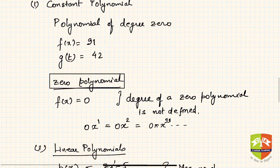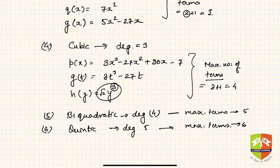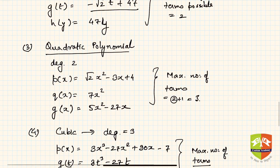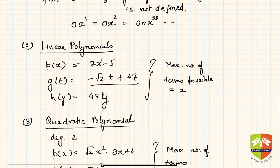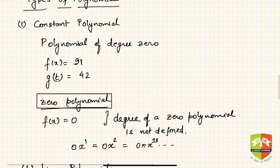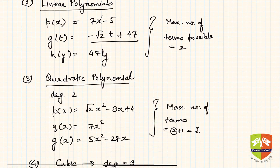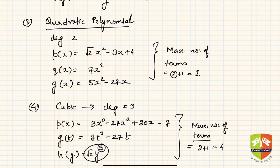So this is one categorization of polynomials. We saw constant polynomials, zero polynomial, linear, quadratic, cubic, biquadratic, and quintic. In this series of sessions, we'll be covering constant, linear, quadratic, and cubic polynomials, and discussing their zeros and other related properties.